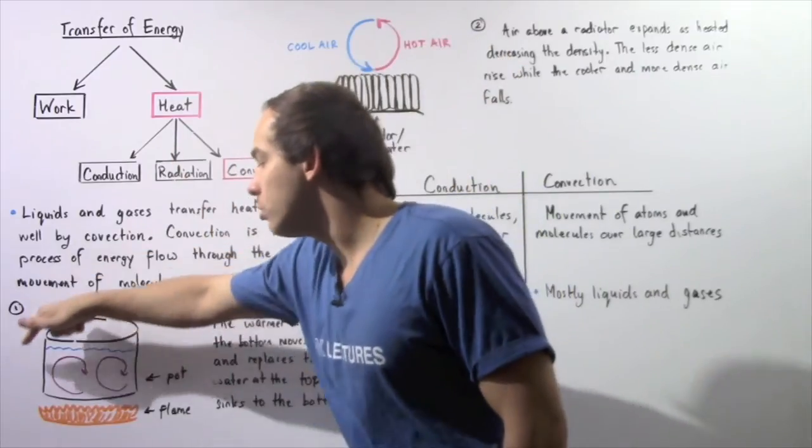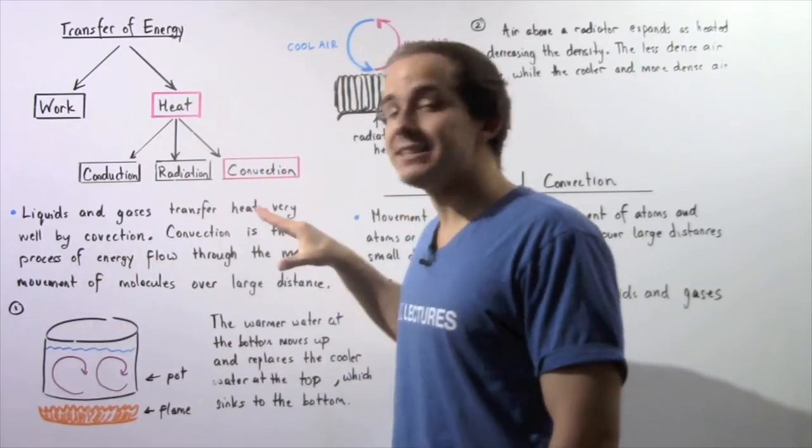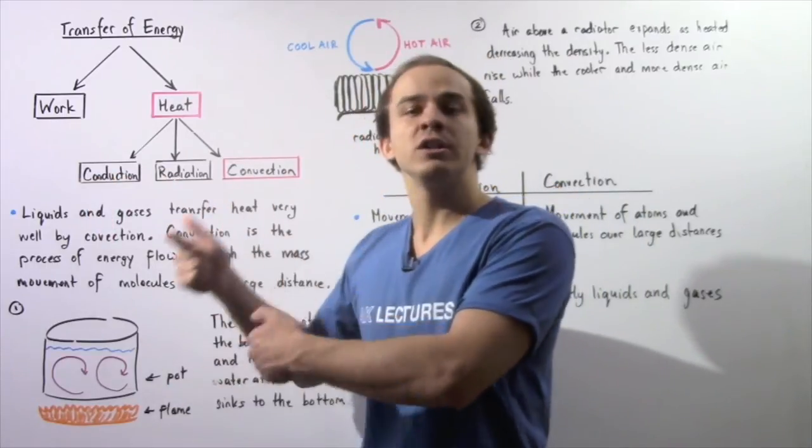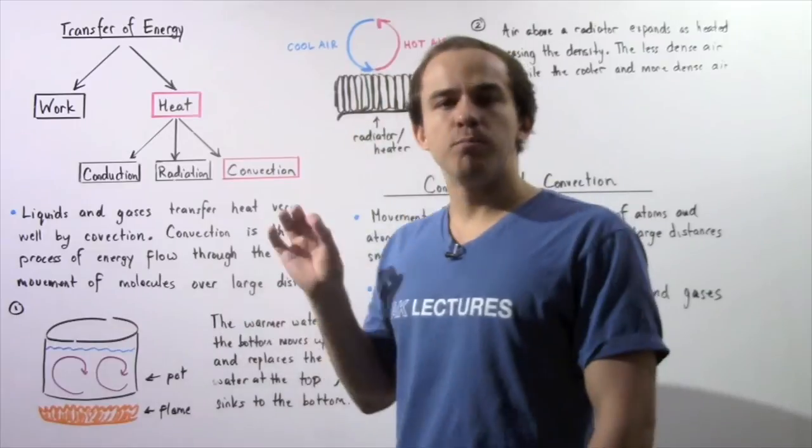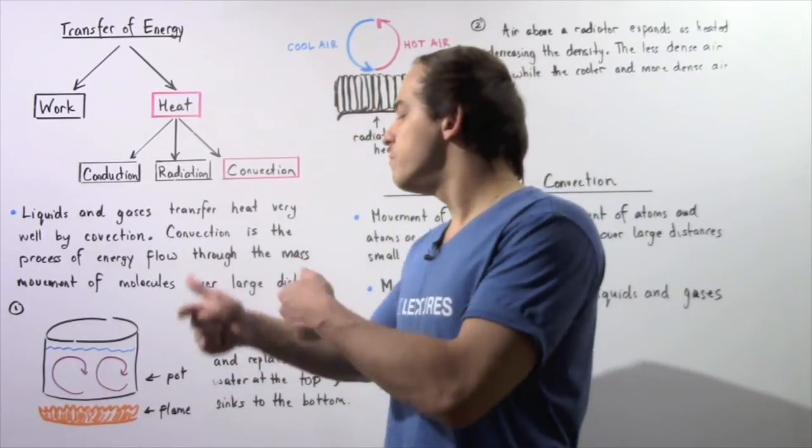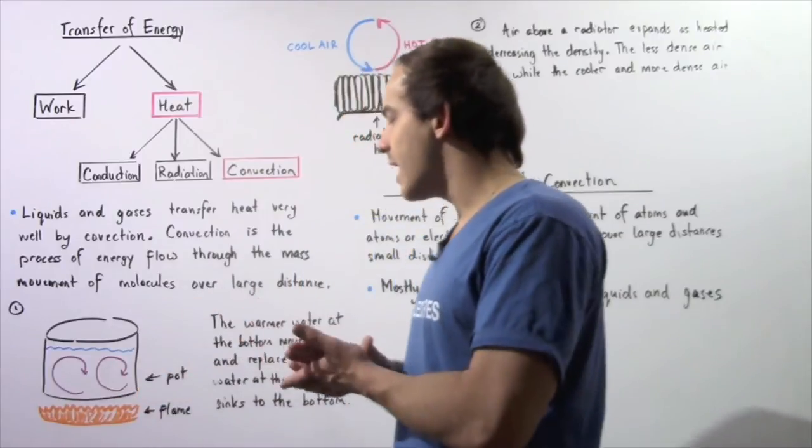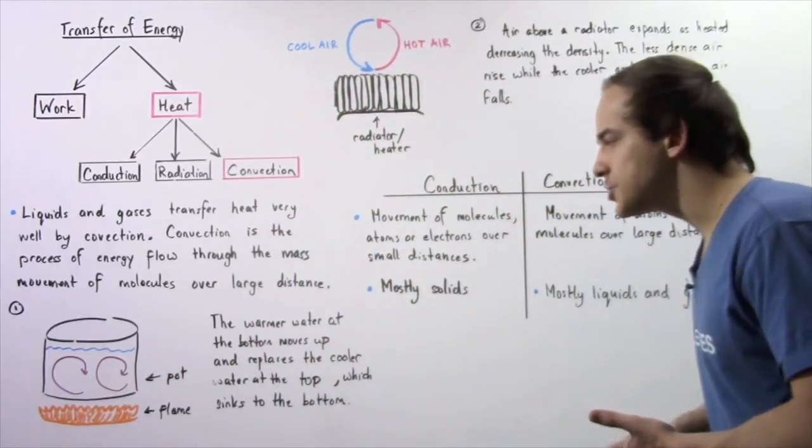The cooler and more dense liquid at the top will drop to the bottom. This cyclical pathway will continue until the liquid boils. This general movement of atoms and molecules inside our liquid is known as convection.